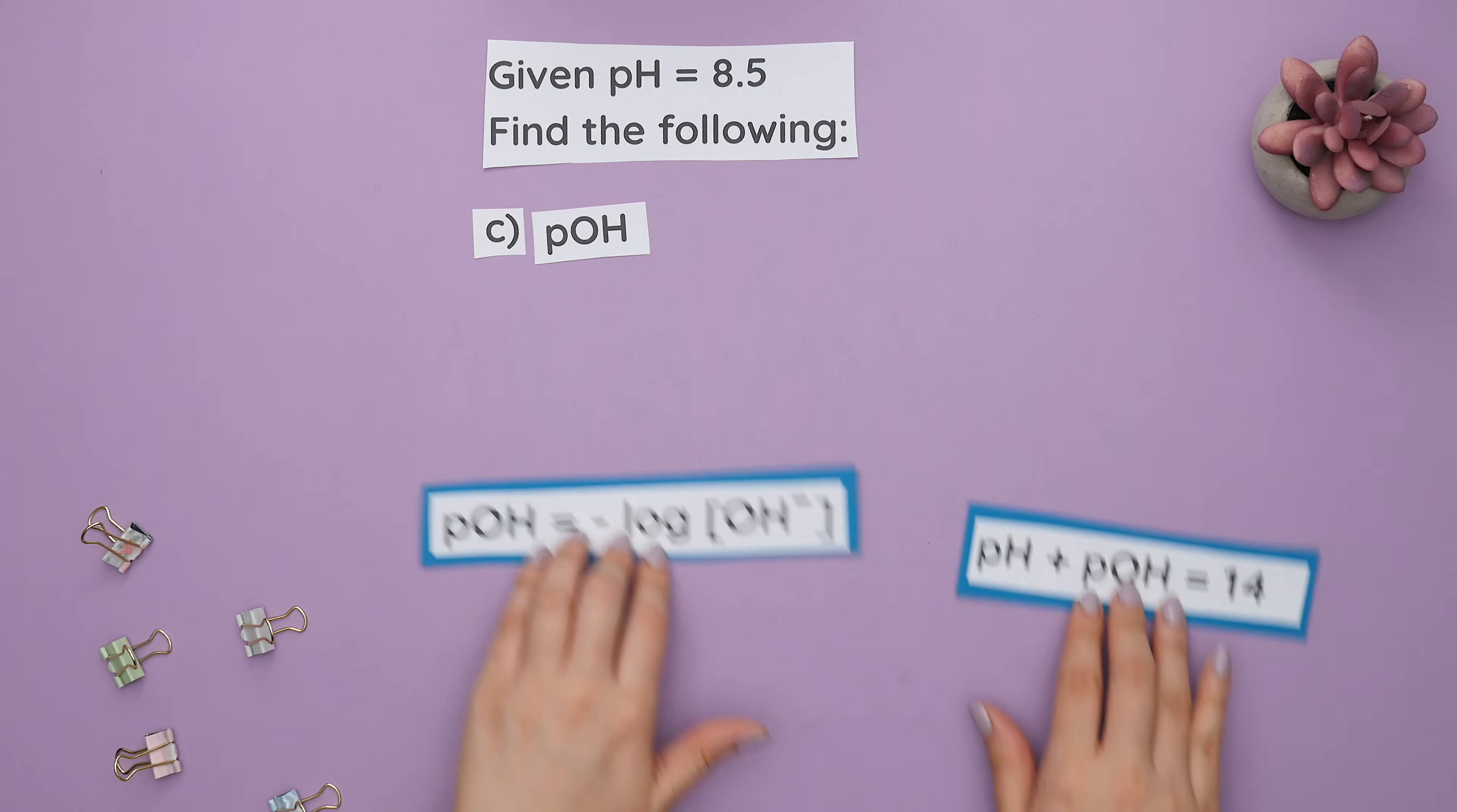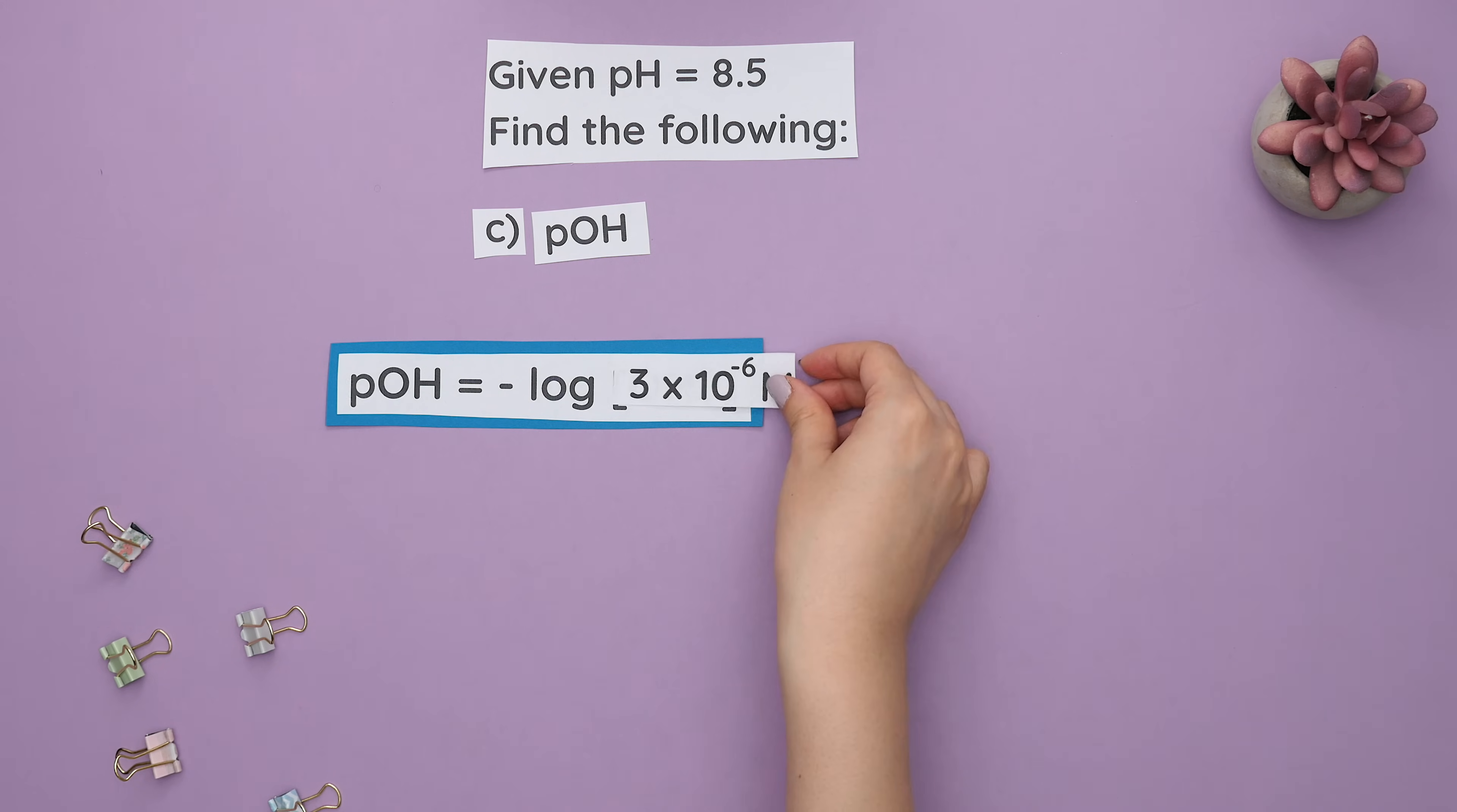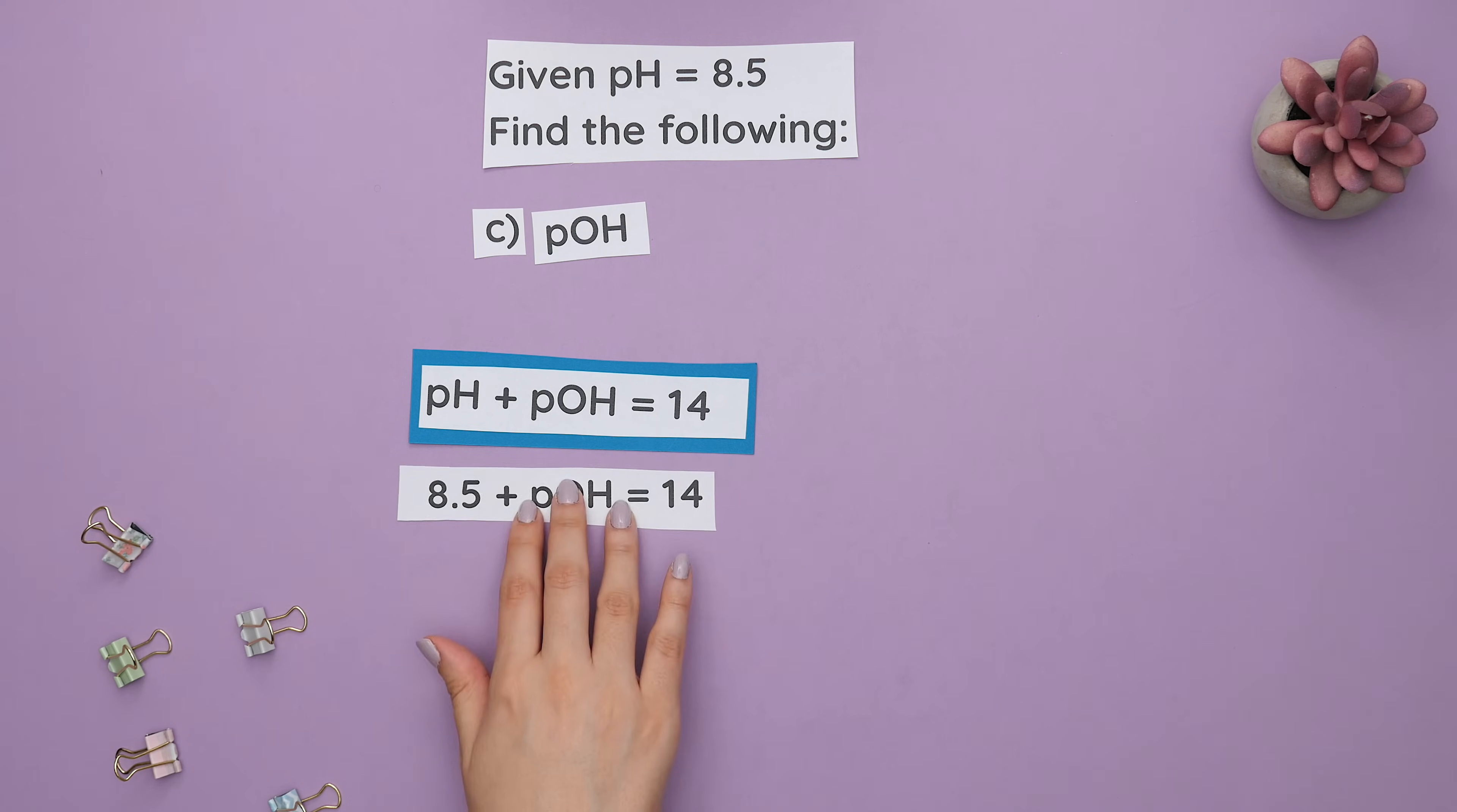Part C. There are two formulas we can use to find pOH in this case. Here's the first formula. We'll plug in the base concentration to get this as our pOH. The second formula we could have used instead was this one. And we can plug in our pH, subtract both sides by 8.5 and we would get the same value.